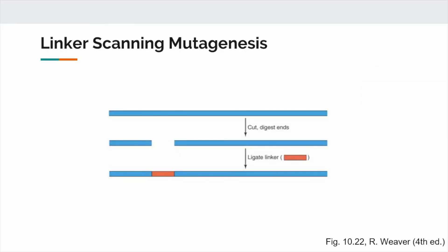Let's now talk about linker scanning mutagenesis in detail. Linker scanning mutagenesis lets us remove an element of DNA while still maintaining the overall length of the DNA molecule, which is useful when we're worried about disrupting protein-DNA interactions that depend on the length of the DNA, such as the distances between cis elements.